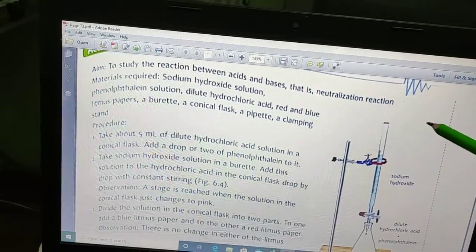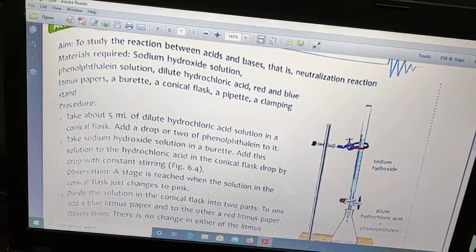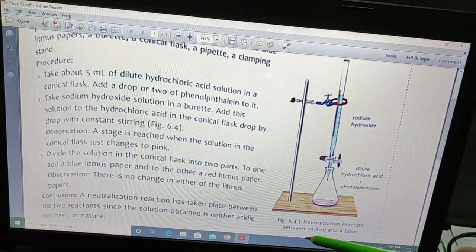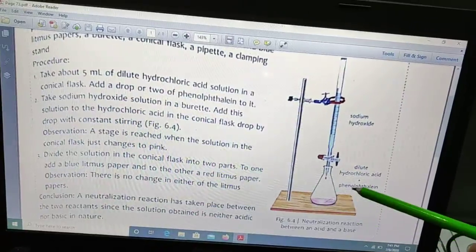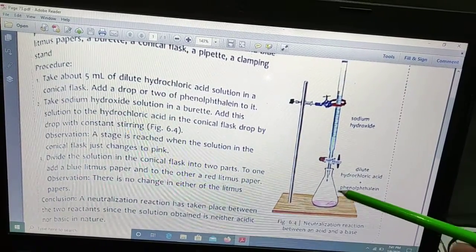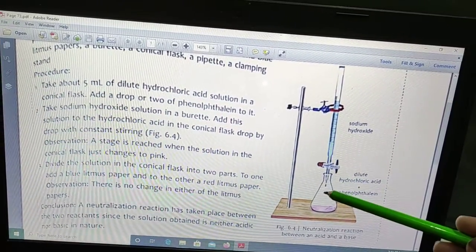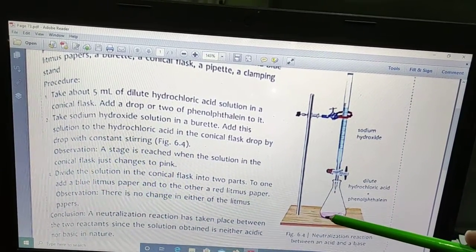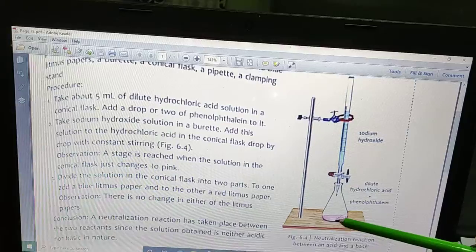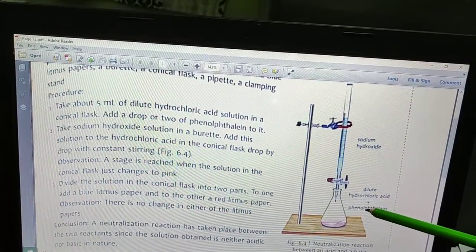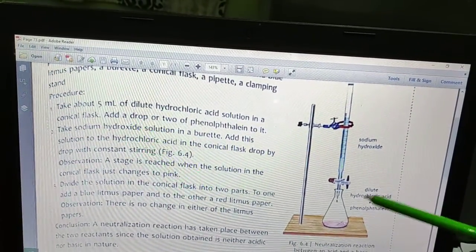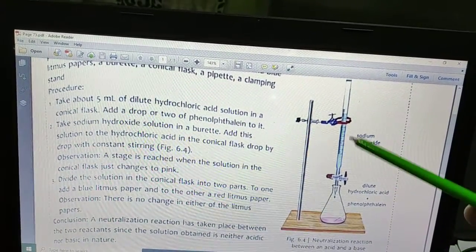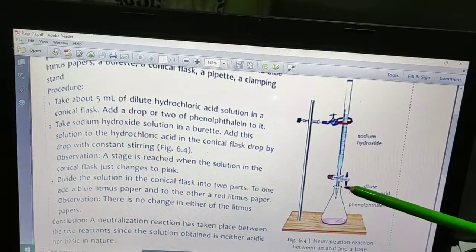Now over here there is an arrangement for this. In the conical flask, this is the conical flask and this is the burette. In the conical flask we have taken 5 ml of dilute hydrochloric acid and we have added phenolphthalein indicator. In dilute hydrochloric acid it is a colorless solution. And in the burette we have sodium hydroxide.